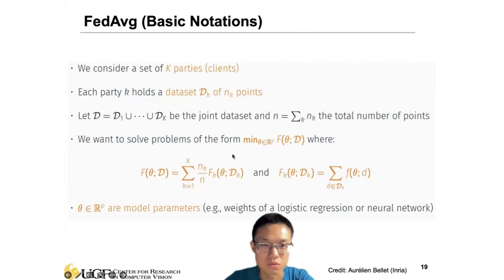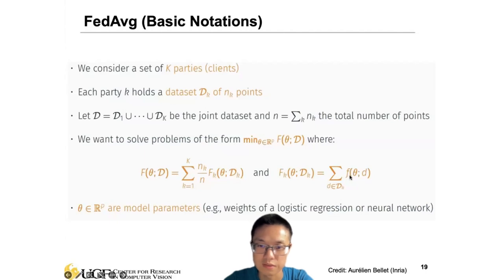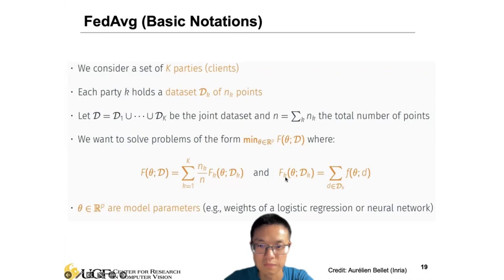Now we want to solve the problem in the following formulation. Looking at the right side, f_k is the loss for one party — the k-th party. f indicates the model, which may be a deep neural network, logistic regression, or conventional machine learning approach. Theta is the parameter of the model. Based on the data points residing on the local client, we can compute the loss function f_k for each client.